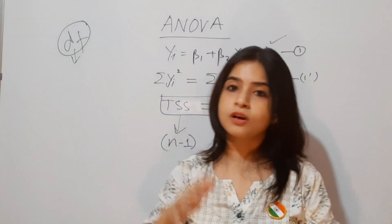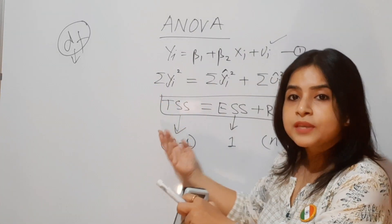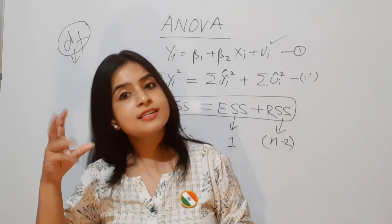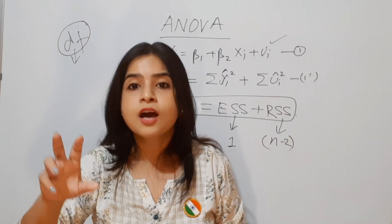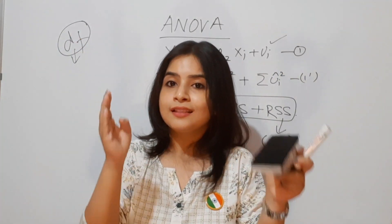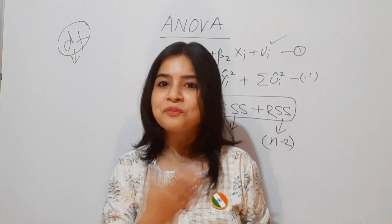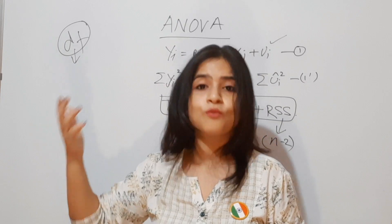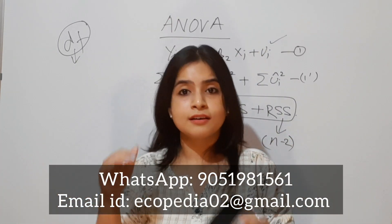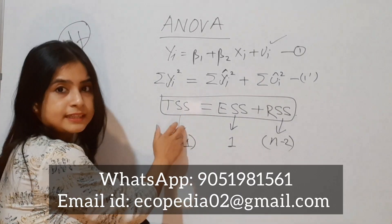So why are these degrees of freedom important? This subdivision of TSS into ESS and RSS — that is, whenever we are studying the components of the Total Sum of Squares — is known as Analysis of Variance, which is nothing but ANOVA. For those who don't know, ANOVA stands for Analysis of Variance. We are analyzing the variance of the model by studying the sub-components of TSS.